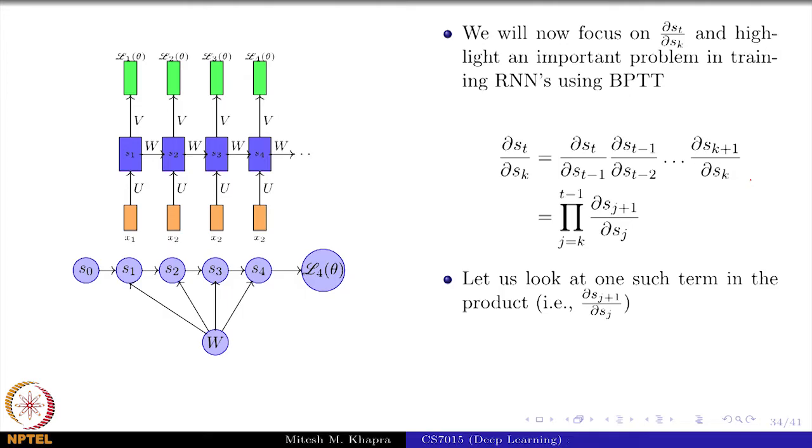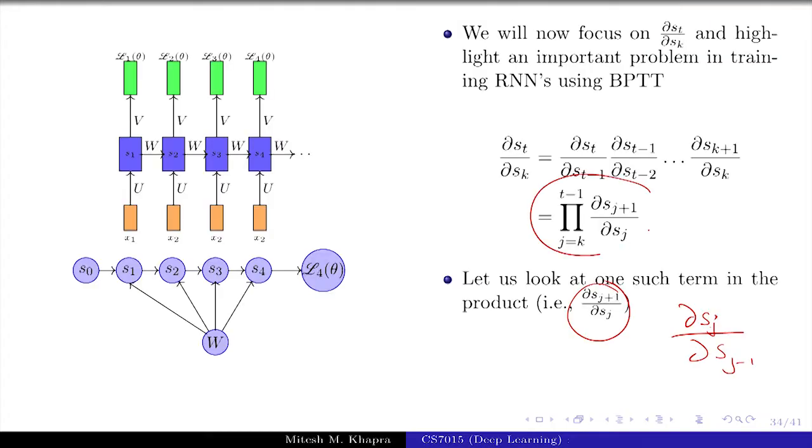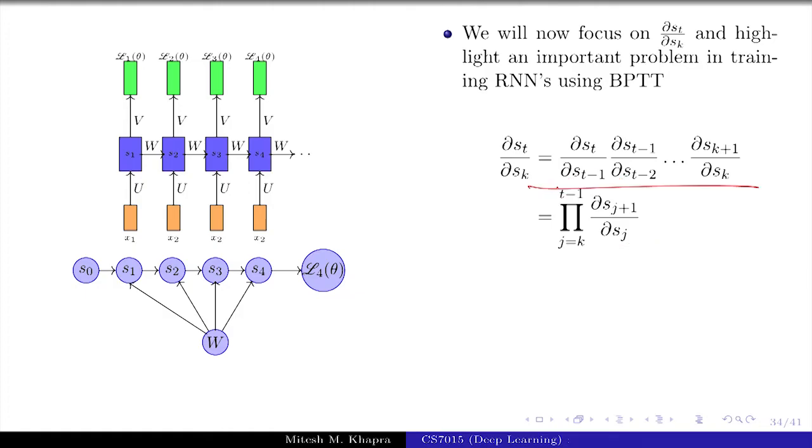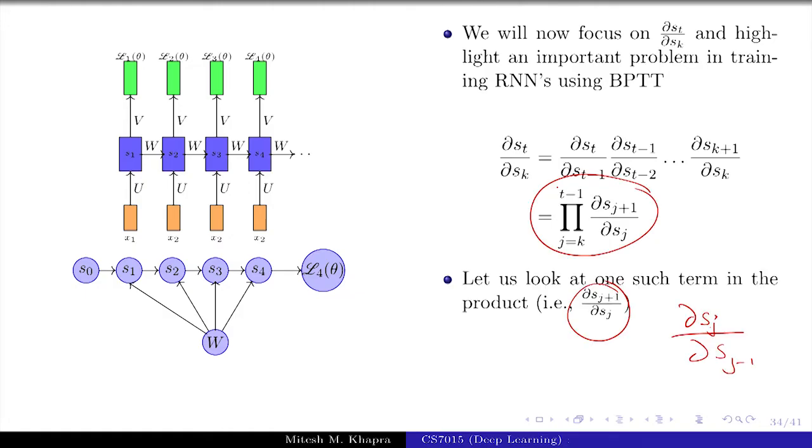Now, let us look at one such term here ∂s_{j+1}/∂s_j. Now, just to confuse you guys from next slide, I will go over to ∂s_j/∂s_{j-1}. Not to confuse you, I just did not pay attention to this. So, instead of j plus 1 and j, I am going to do j and j minus 1, it remains the same, does not matter. So, we are interested in this particular quantity.